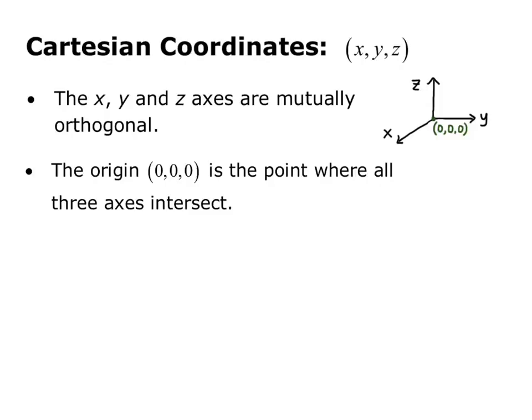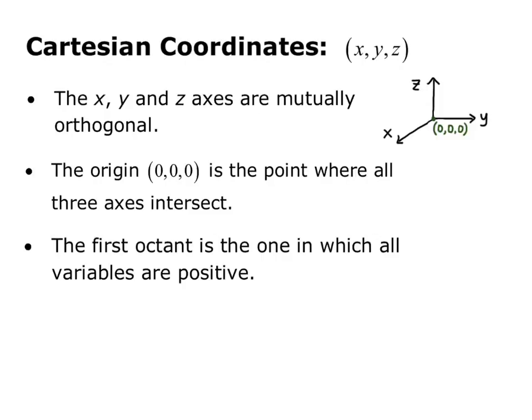The origin, 0, 0, 0, is the point where all three axes intersect. The first octant is the one in which all variables are positive. We do not number the other octants like we do with quadrants in two dimensions. We only label the first octant where all are positive.